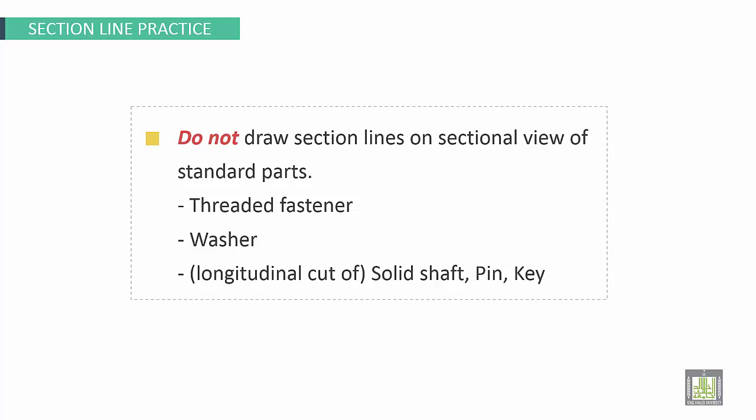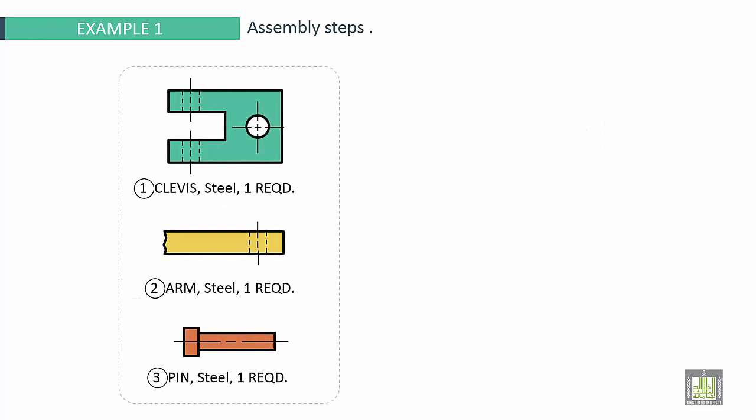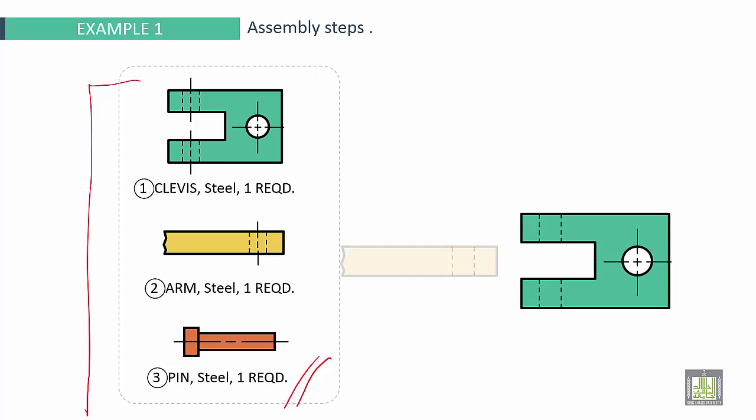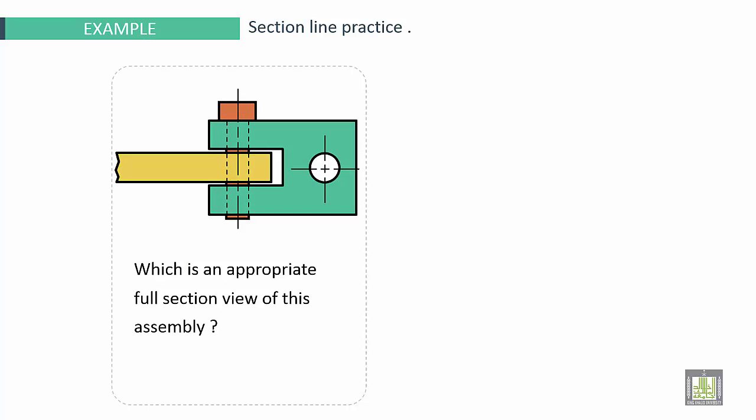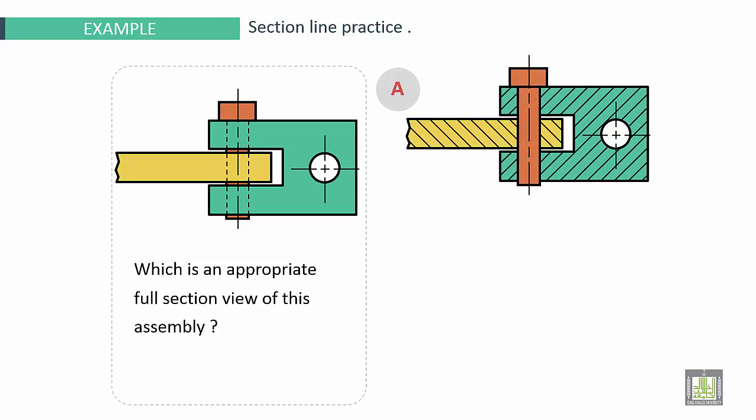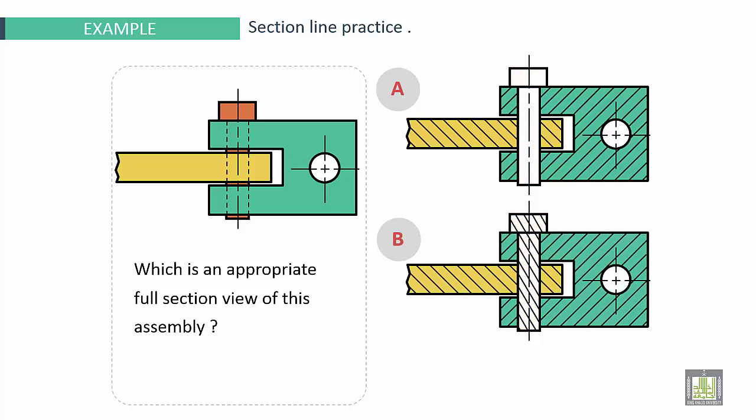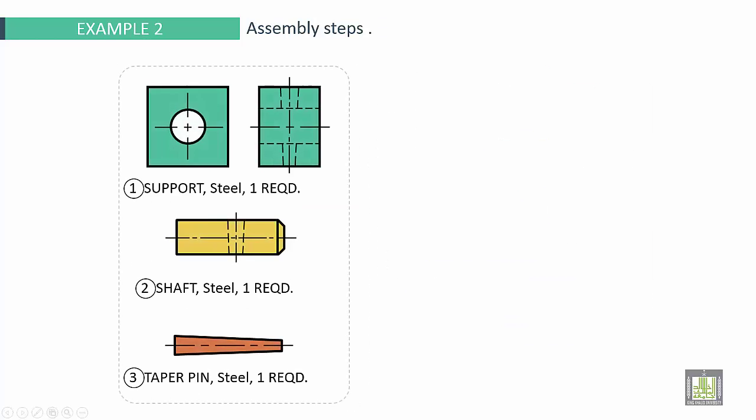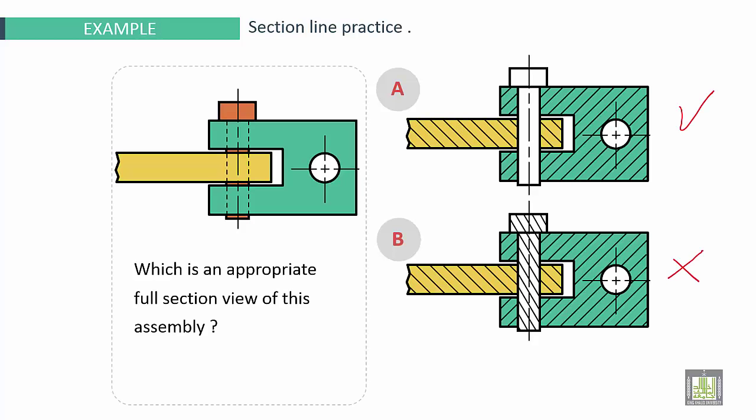Do not draw section lines on sectional view of standard parts. For example, 3D fastener, washer, longitudinal cut of solid shaft, pin or key. We'll take example here. We have to make assembly of these three parts. So part number three, it is a standard part. If we make assembly with this pin. Now with section. First possibility. Second possibility. So do not make etching and section lines on standard parts. This one is good. This is poor or wrong as per standards of drawing.